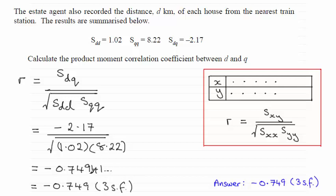Don't forget that the product moment correlation coefficient will always be a value that is greater than or equal to minus 1 or less than or equal to 1. So if you get a value outside that range, you know you've made a mistake.